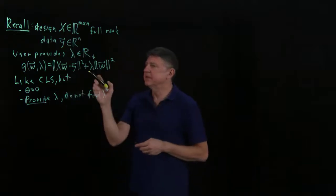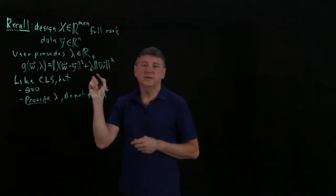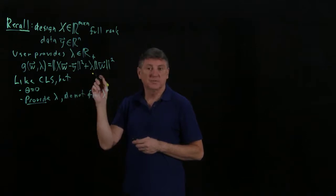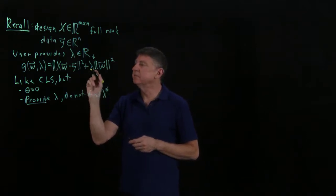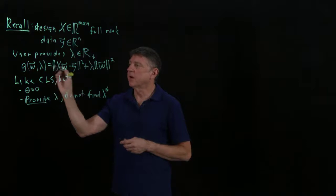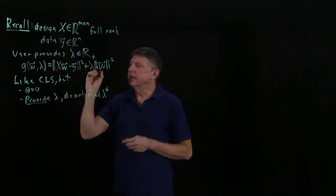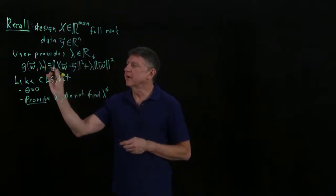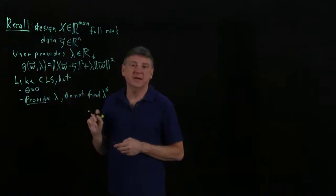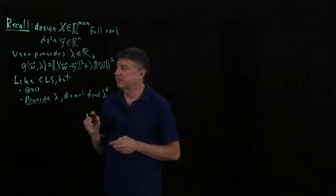That's what makes g a function, an objective, rather than being a Lagrange function. It's an objective because the user provides this hyperparameter, and then we have to find a w star that satisfies this.